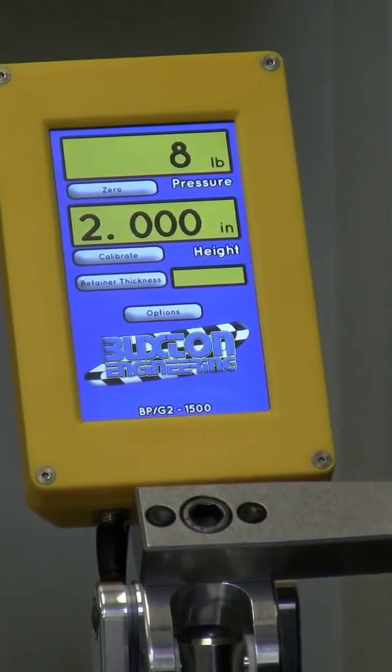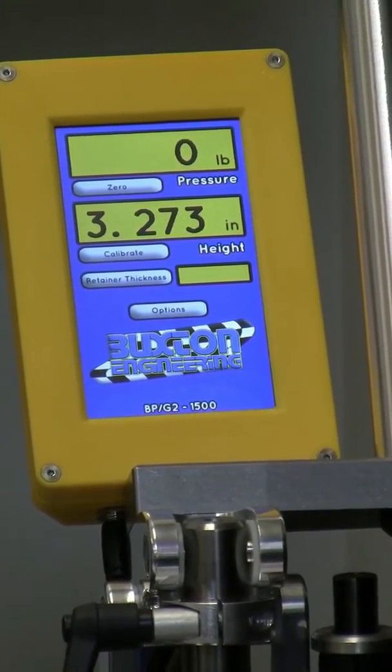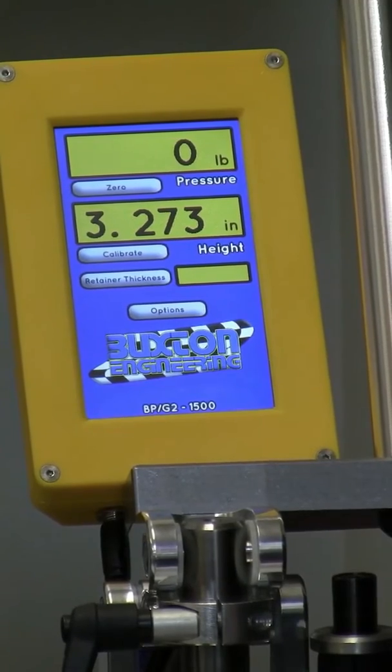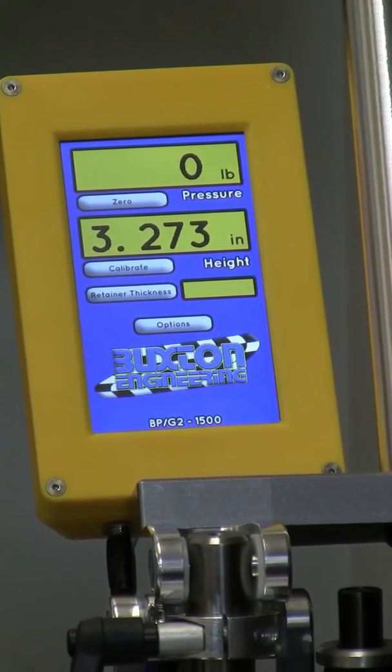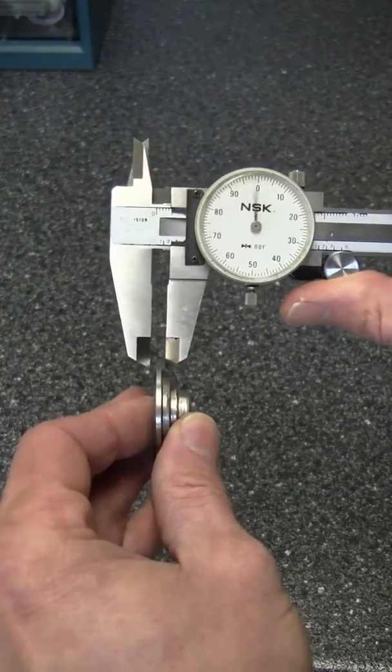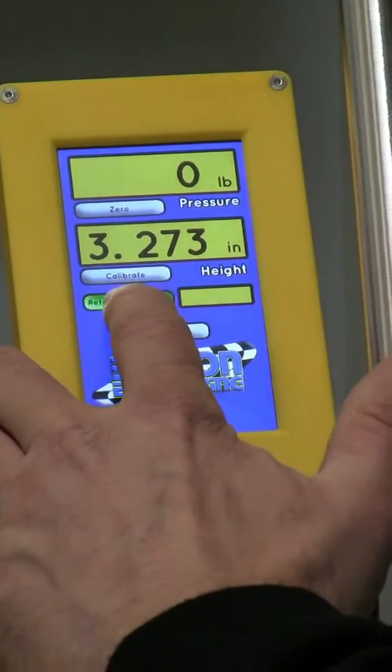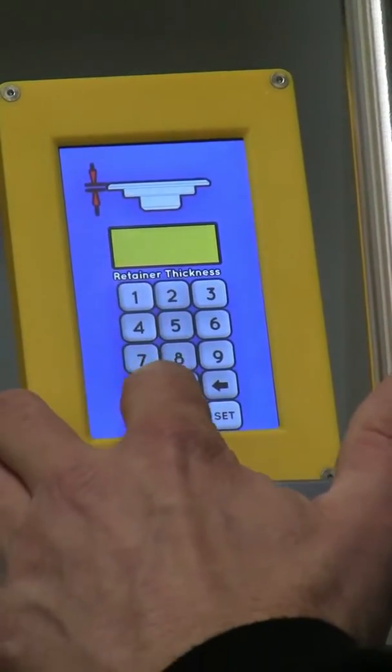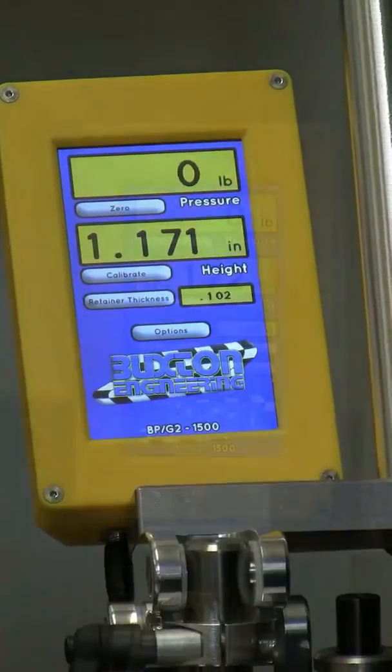If you are testing double or triple wound springs, you will want to use a retainer to step down the inner springs for an accurate reading. We have added a feature that will subtract the retainer thickness from the standard height to make this super easy. Just measure the outer retainer thickness and then press the retainer thickness button. From there just type in the measured value and press the set button. It will now subtract the retainer thickness to compensate the overall height.